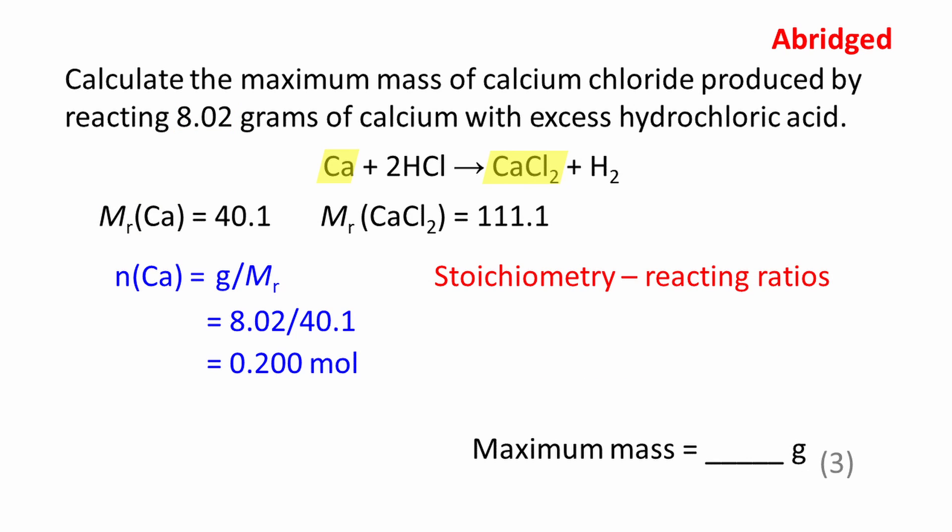The balanced chemical equation gives us the ratio in which substances react to form products. The formal term for this concept is stoichiometry. There are no balancing numbers in front of the calcium or calcium chloride. One mole of calcium will produce one mole of calcium chloride. Two moles of calcium will produce two moles of calcium chloride, and so on.